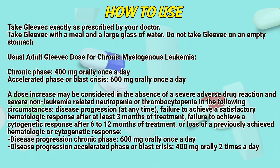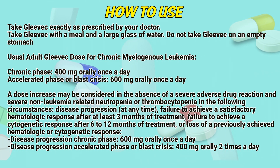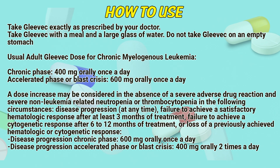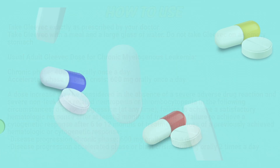Or loss of a previously achieved hematologic or cytogenetic response. Disease progression, chronic phase: 600mg orally once a day. Disease progression, accelerated phase or blast crisis: 800mg orally (400mg orally 2 times a day).